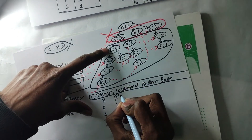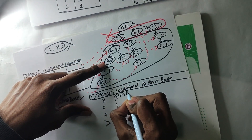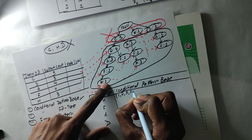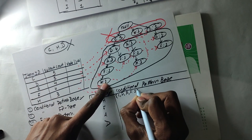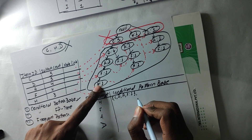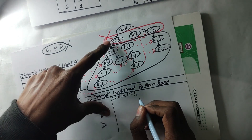C is one item. The other one is D, and the other one is A. What is the support? It's 1. Let's see — the other items are listed here.